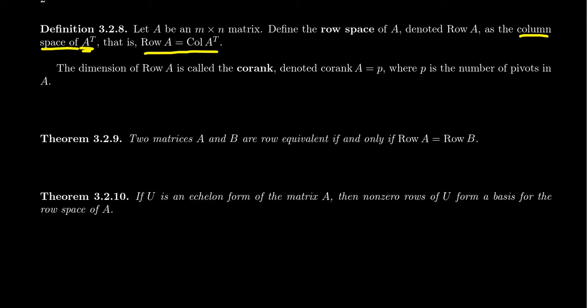More specifically, the row space of A is equal to the column space of A transpose. Why do we call that the row space? Remember what the transposition operation does: it turns columns into rows and rows into columns. So the column vectors of A transpose are just the row vectors of A. The row space is the span of the row vectors of A, in the same way that the column space is the span of the column vectors of A.